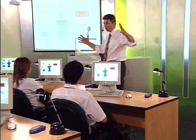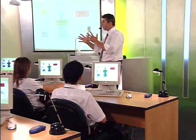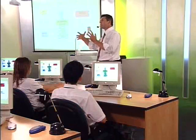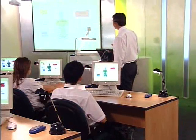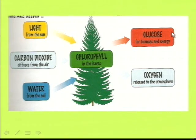So stuff has to go into the plant and some stuff comes out. Quite usefully, the stuff that comes out — one is very useful for the plant: the glucose that it produces for its energy. But the other thing, which is hugely useful for us, is oxygen.